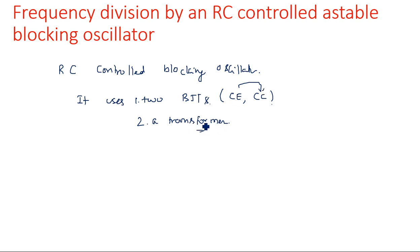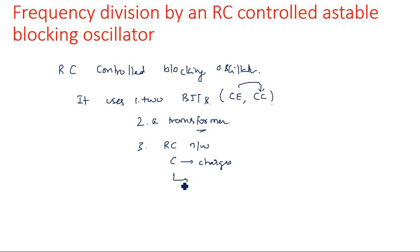We are using an RC network where the capacitor charging and discharging gives the output, because we take the output across the capacitor to get the sweep voltage. This is the background of the RC-controlled astable blocking oscillator.